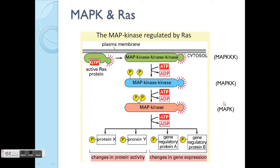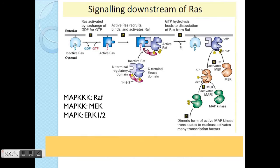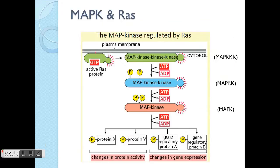To phosphorylate MAPK we require a kinase, so the level above is called MAPKK — MAPK kinase. And to phosphorylate MAPKK requires another kinase called MAPKKK. Easy — just increase the number of Ks.